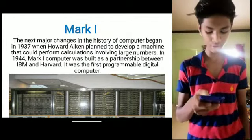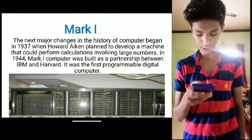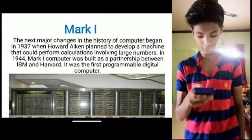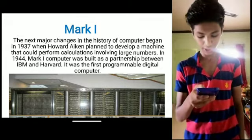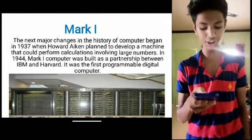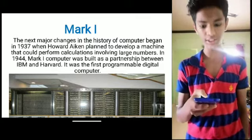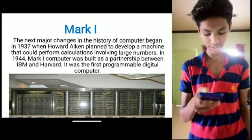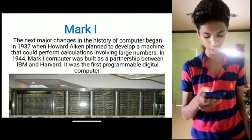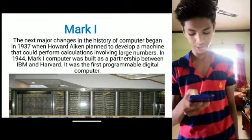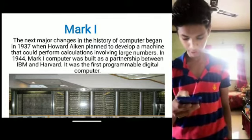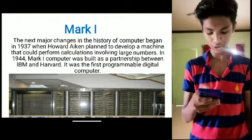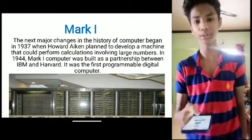9. Mark I: The next major change in the history of computers began in 1937, when Howard Aiken planned to develop a machine that could perform calculations involving large numbers. This led to the 1944 Mark I computer. It was built in partnership between IBM and Harvard. It was the first programmable digital computer.